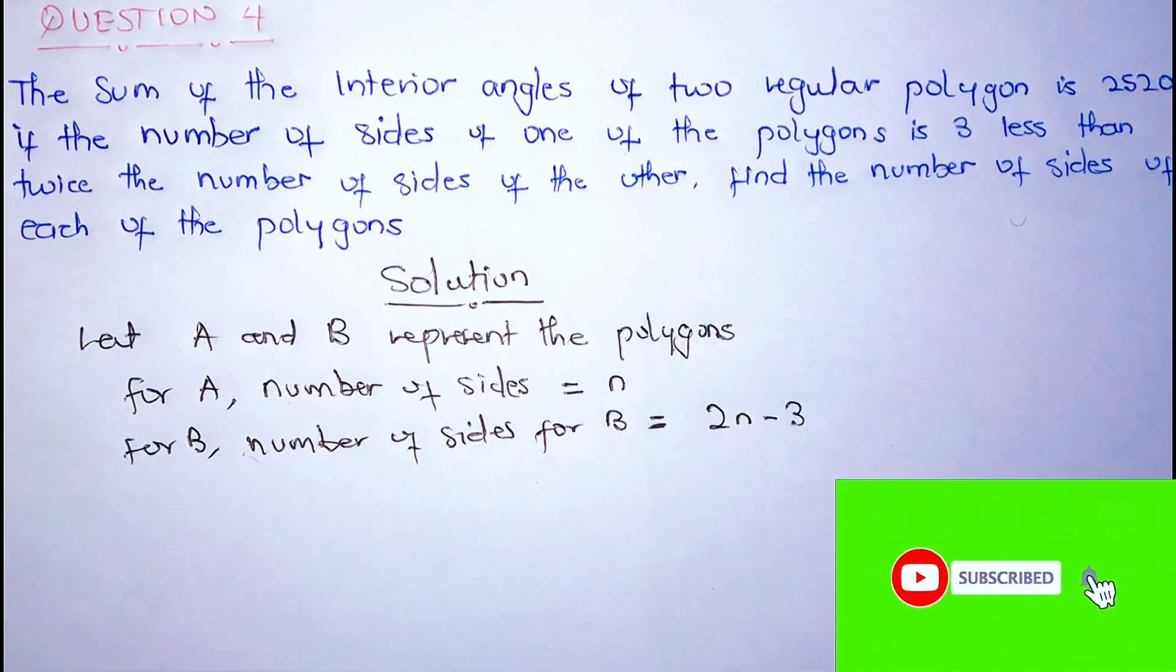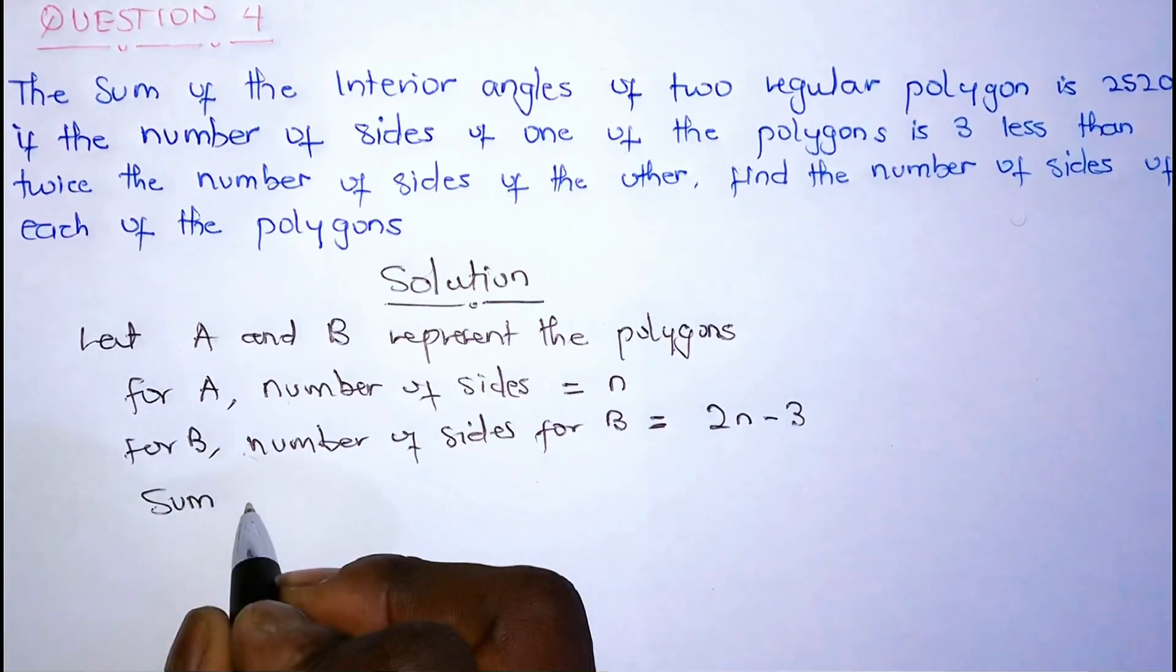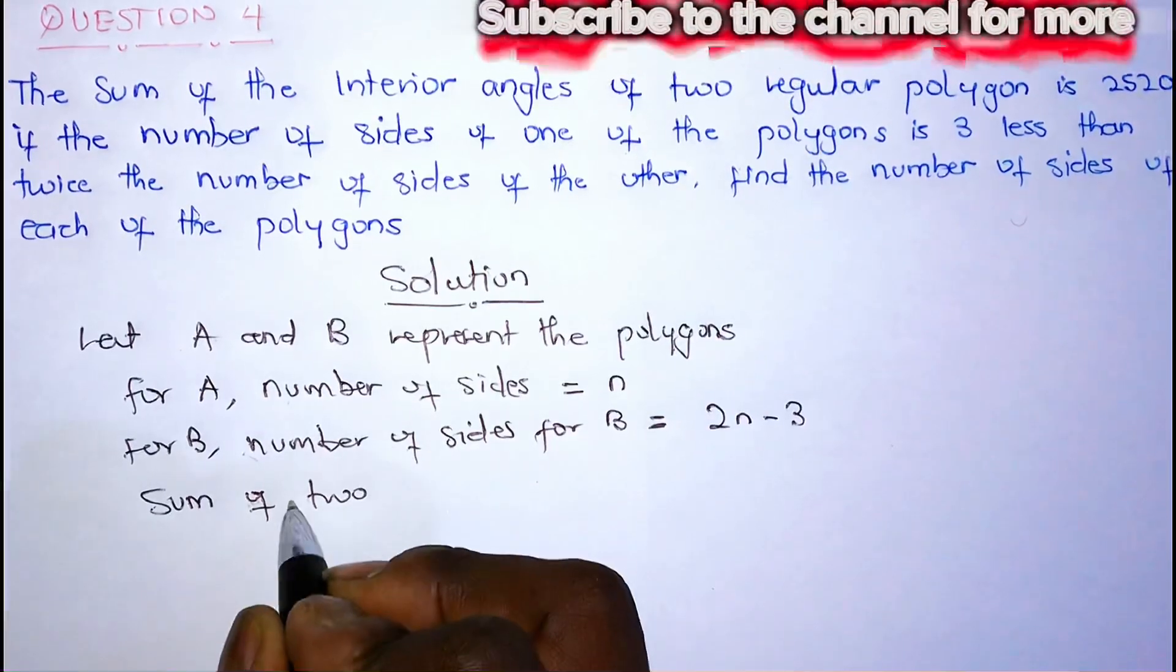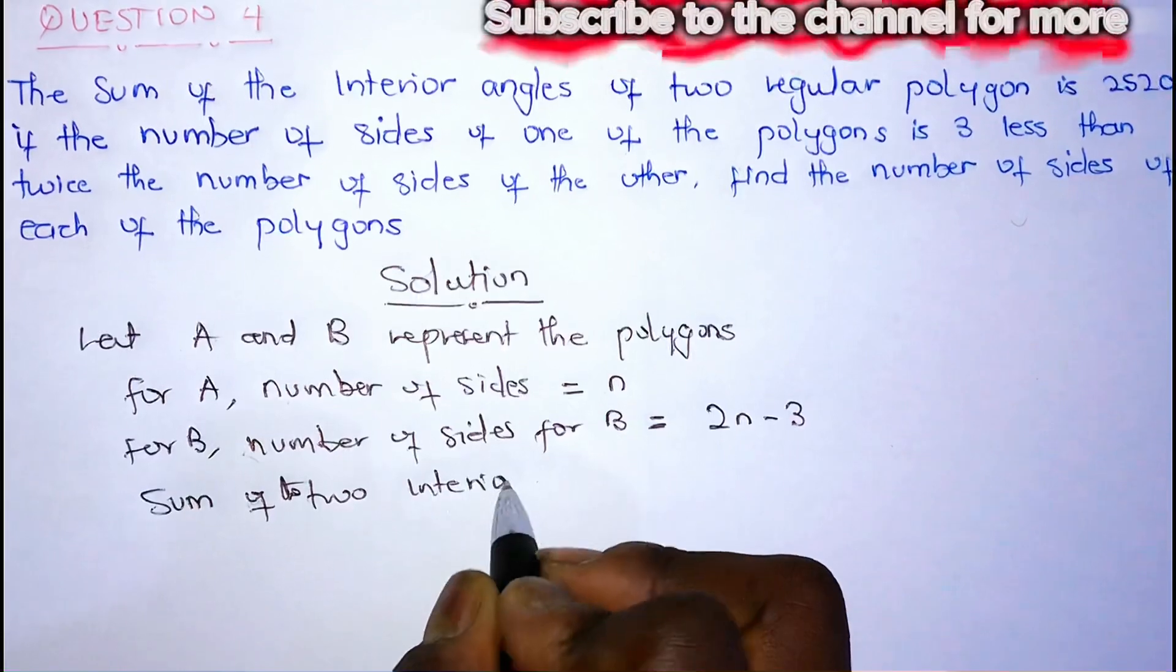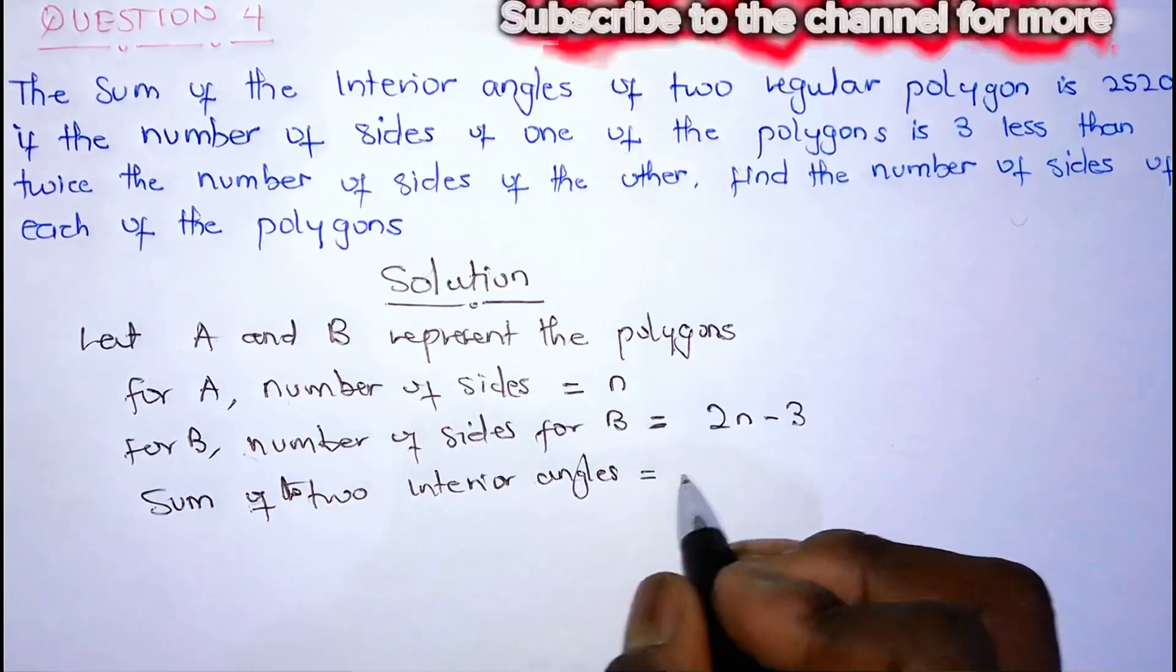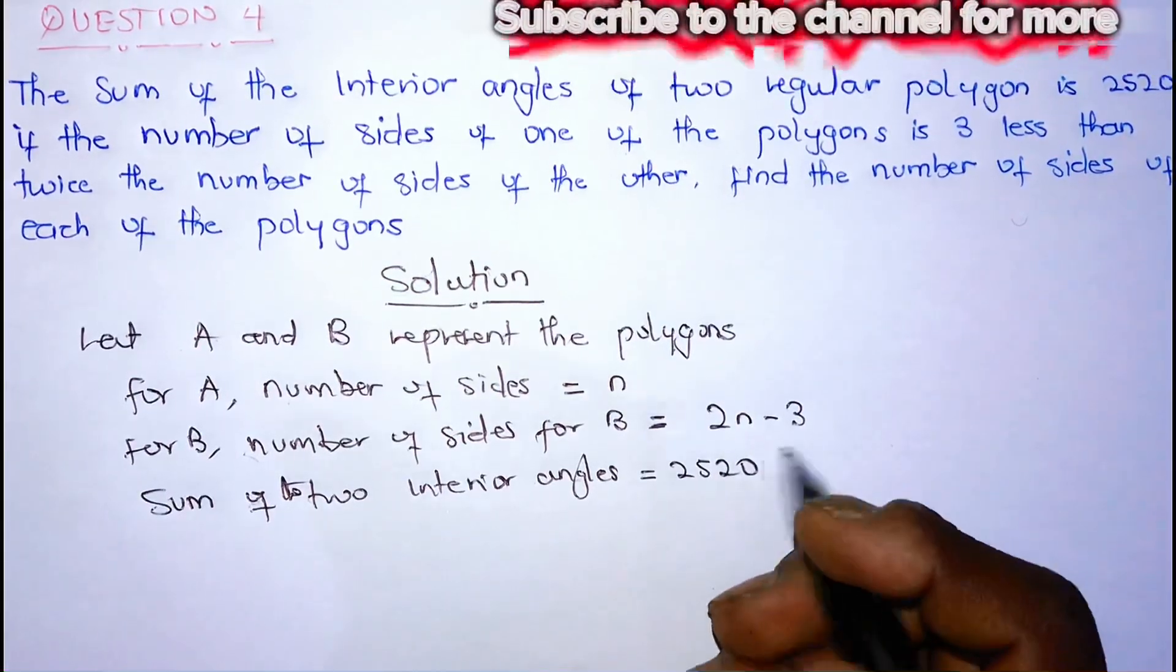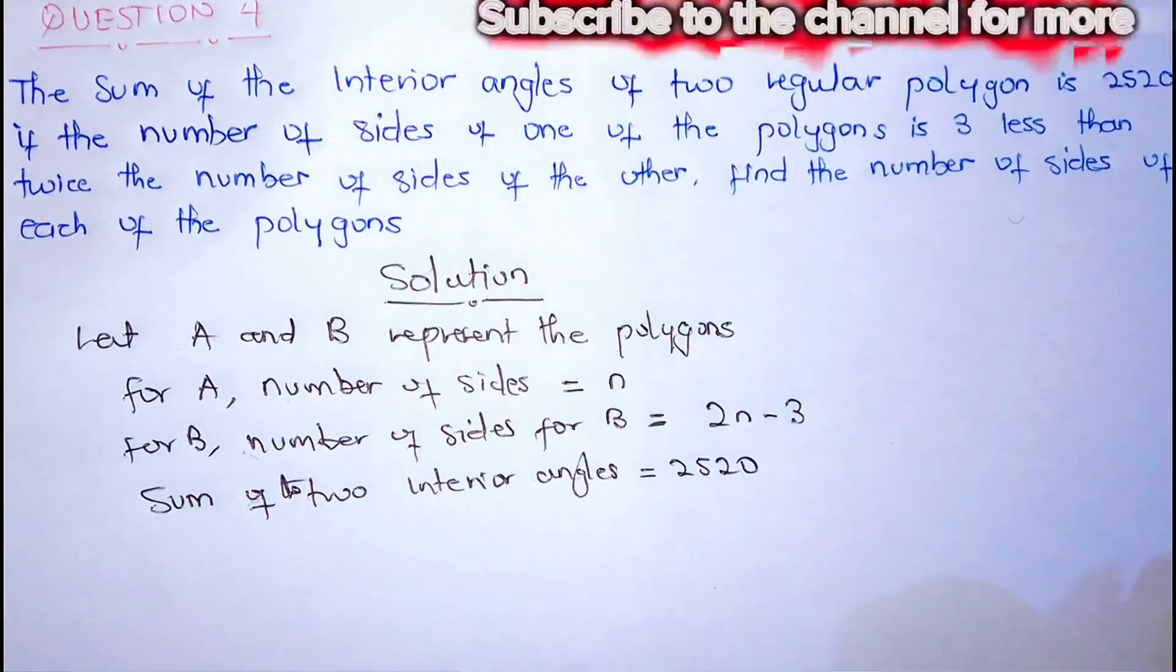Now in the question, the sum of these two angles here is 2520. So sum of the two interior angles is equal to 2520. So let's perform some calculation.